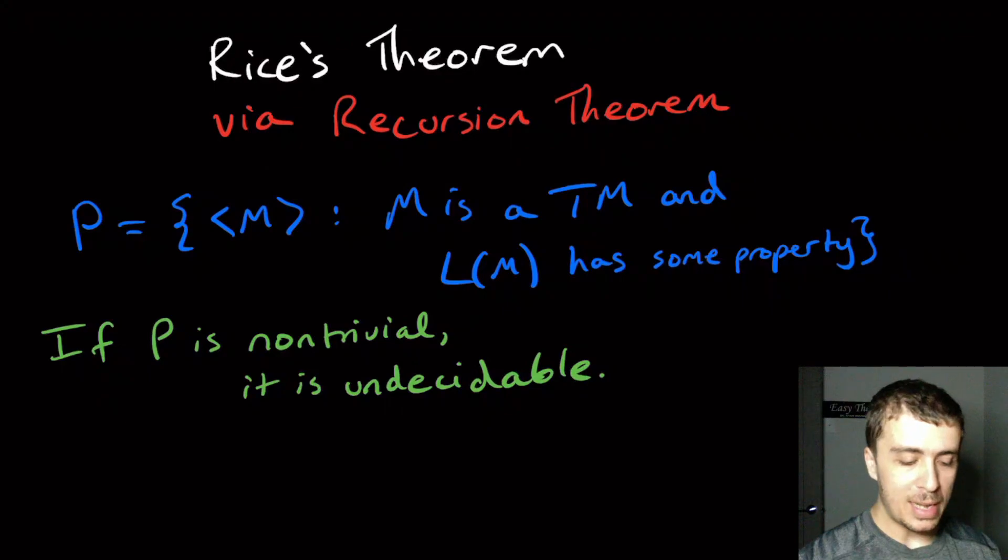What I want to do today is to prove Rice's theorem via the recursion theorem. You might think, why are you proving a theorem with a theorem? It's actually a lot easier to prove Rice's theorem this way than doing it in the straightforward way.